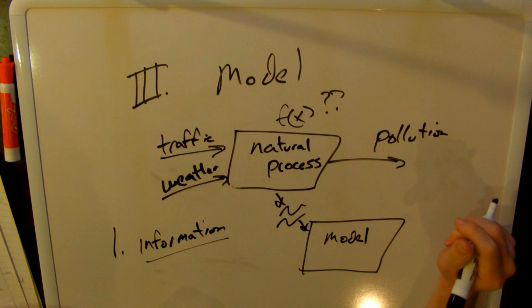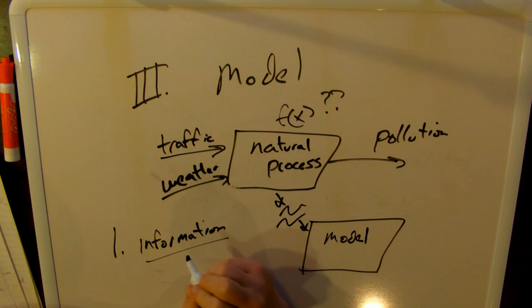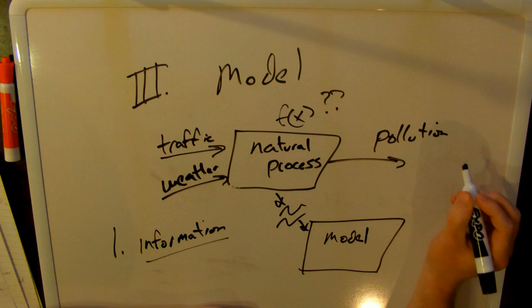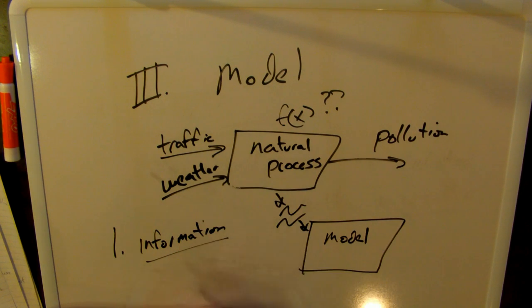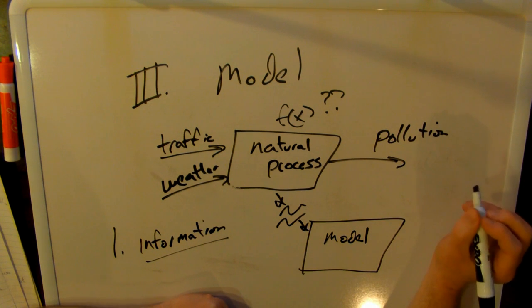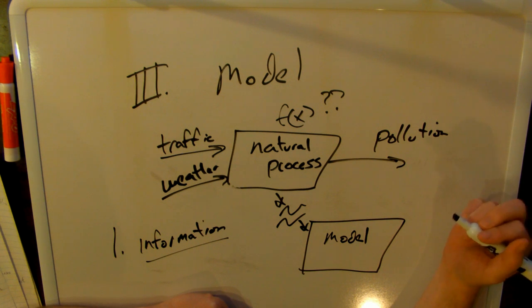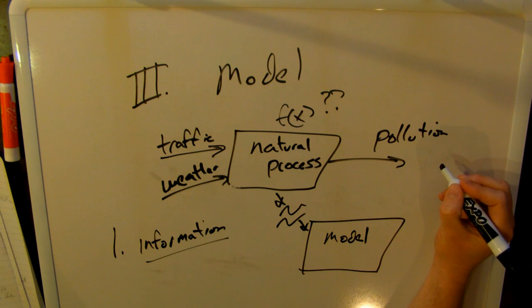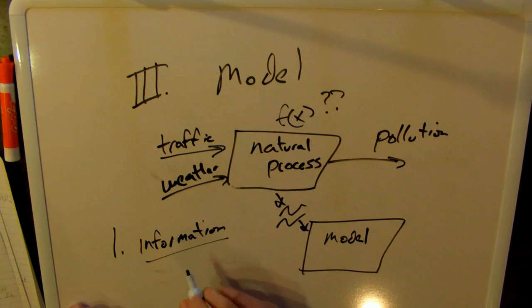And by the way, before we get too far ahead, this would be a good time to give you some statistical lingo. These things that are going into our model are oftentimes in statistics called independent variables. And on the outside, what comes out, pollution, this is often called a dependent variable. Why is it dependent? Well, pollution is dependent on the other variables that are traffic and weather, which are independent of anything else, at least so we believe in our simple little world. I'm calling this out just so if I use these terms later on, you're not tripped up and not surprised. Sometimes also the dependent variable is called an endogenous variable, whereas traffic and weather are called an exogenous variable.